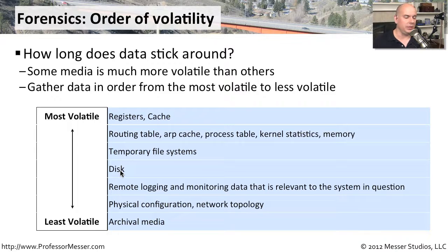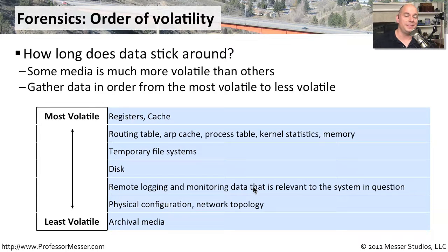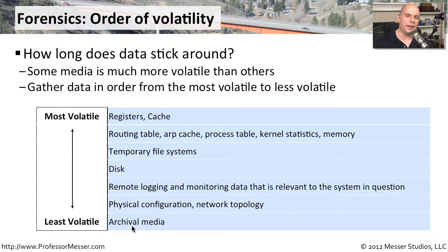Information on disk is there until we do something with it, so we're getting less and less volatile data. Remote logging data is sent outside of that computer system, so it may be around for a very long time. The physical configuration and archival media are the least volatile. As you gather forensics about a security incident, you need to gather the most volatile information first and work your way down the list.